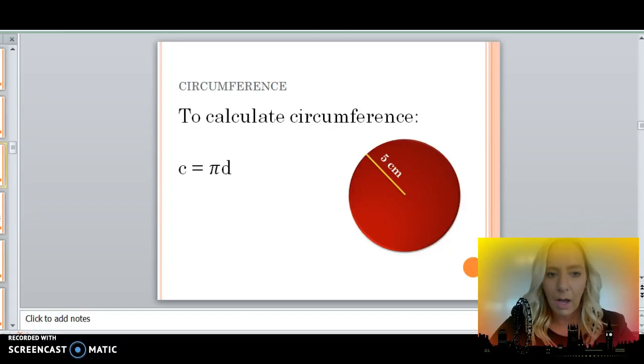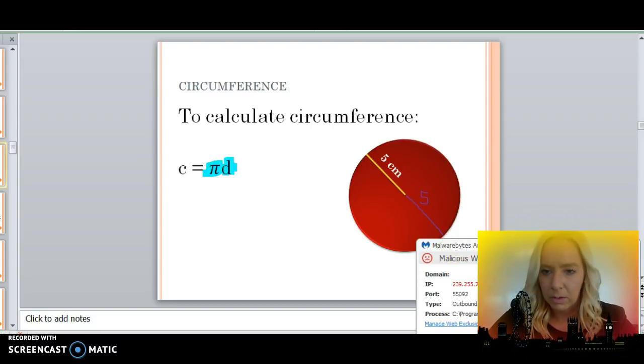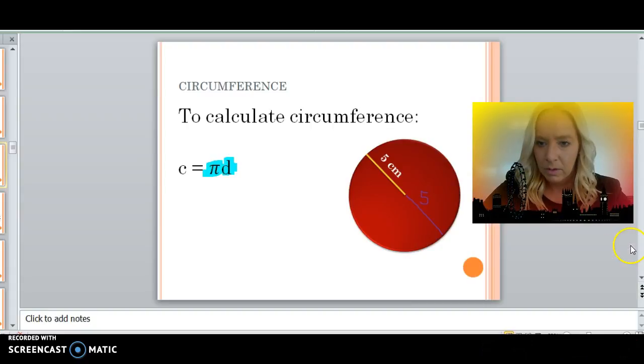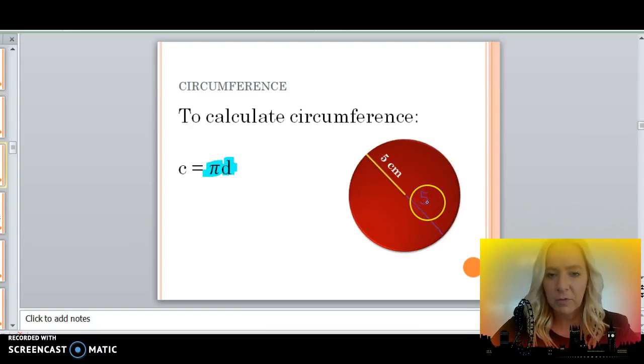Now, sometimes we don't have the diameter, or the distance across. Our formula is pi times diameter. But what we learned about in our previous video is to find diameter from radius, we multiply the radius by 2. So you could do 5 plus 5, or 5 times 2, which is 10.